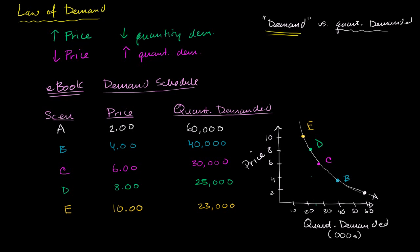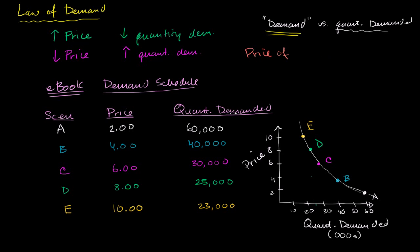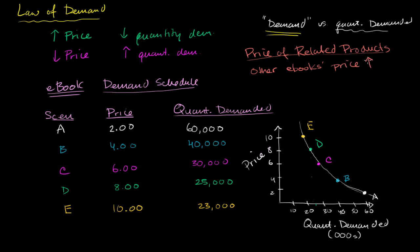The first of these that I will focus on is the price of related products — and I'll say related products, not competing products, because we'll see that they're not all competing. The price of related products is one of the things that we're assuming is constant when we show this relationship. Now, what would happen if these things changed? Imagine other e-books' price goes up. So what will that do to our price-quantity demanded relationship?